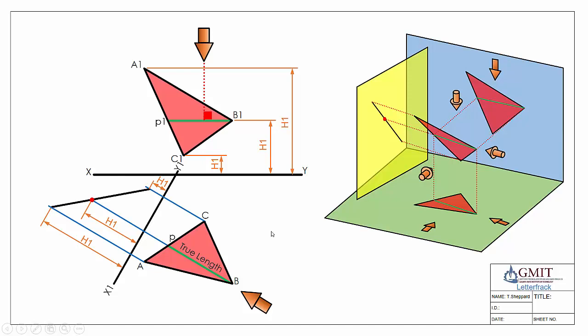So that saves us having to take an auxiliary. So we only have one auxiliary here as opposed to needing a first auxiliary to find the true length line and then the second one. We have the true length line before we take our first auxiliary.